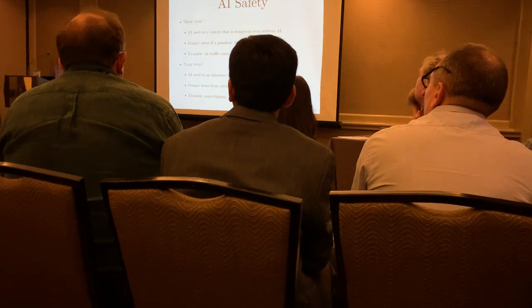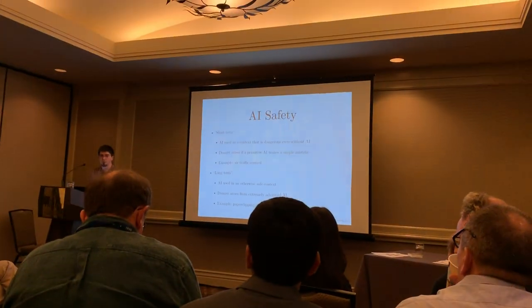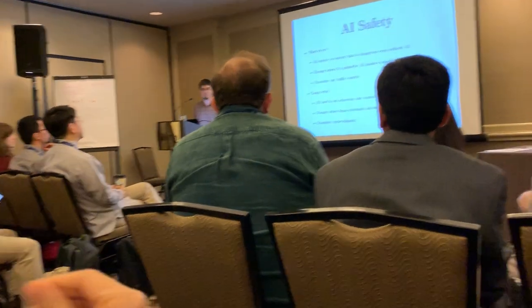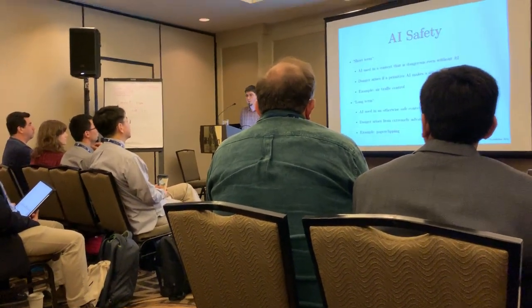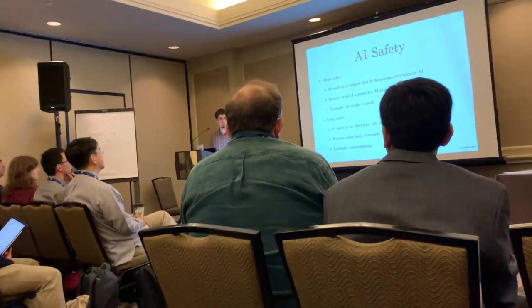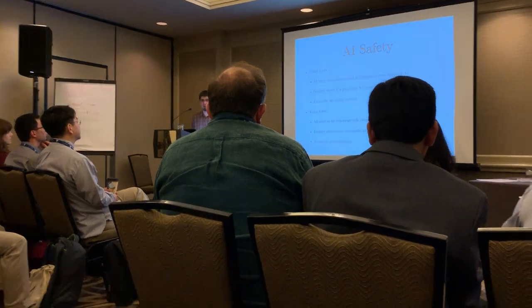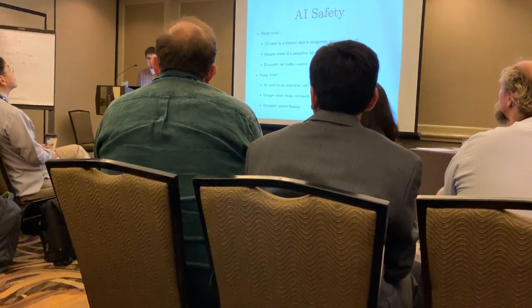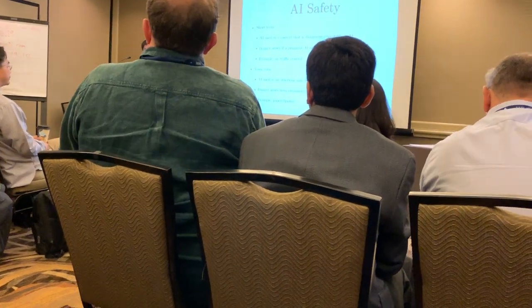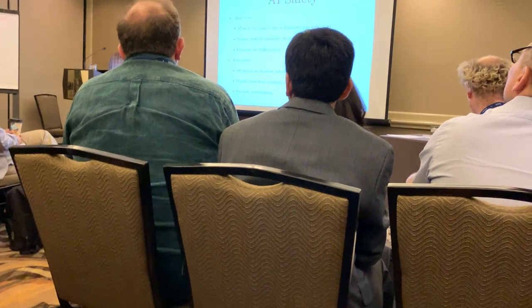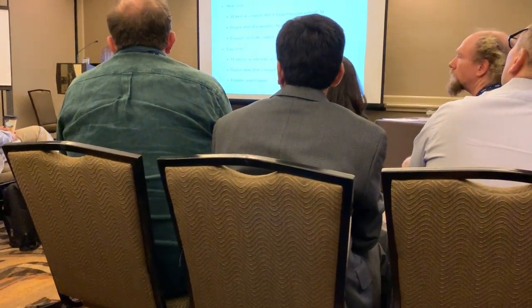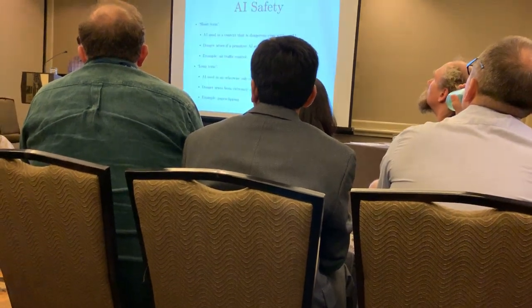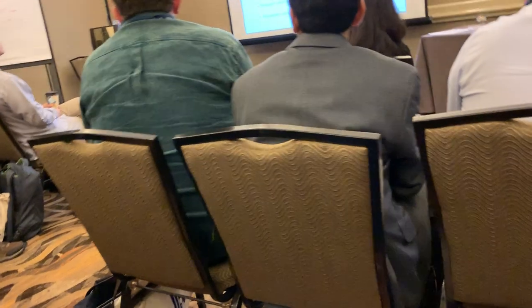Now let's get into AI safety. People have different things in mind when they talk about it. Short-term safety is when there's a normally dangerous situation requiring high competence — like air traffic control. A highly competent trained person keeps it safe; a child doing it will make mistakes and cause crashes. So short-term AI safety concerns whether the AI is competent enough.